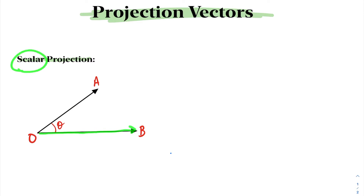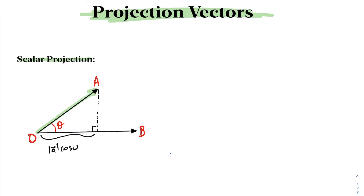The term scalar means a real number. What we want to do is project vector A onto vector B, which means there would be a 90-degree angle, and we project A onto B. This length here — the projection of A onto B — is going to be the magnitude of A times cosine of theta. By definition, that component is the magnitude of A cosθ, and the other component is the magnitude of A sinθ. So the scalar projection of vector A onto vector B is the magnitude of A cosθ.